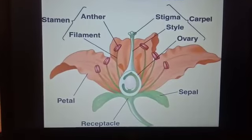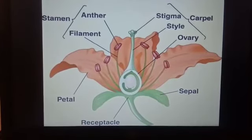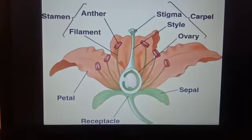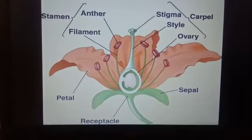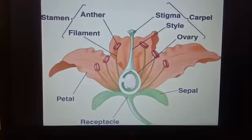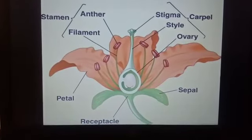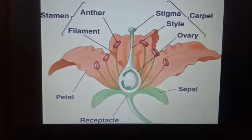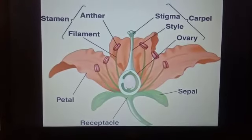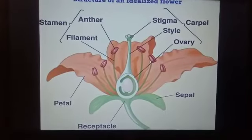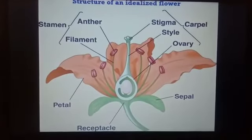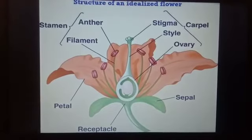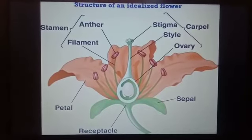The next part is the stamen, which is the male reproductive organ of the plant. The stamen is made up of two parts: the filament and the anther. The stalk of the stamen is called the filament, and the swollen top is called the anther. The anther makes and stores pollen grains, which contain the male gametes of the plant.